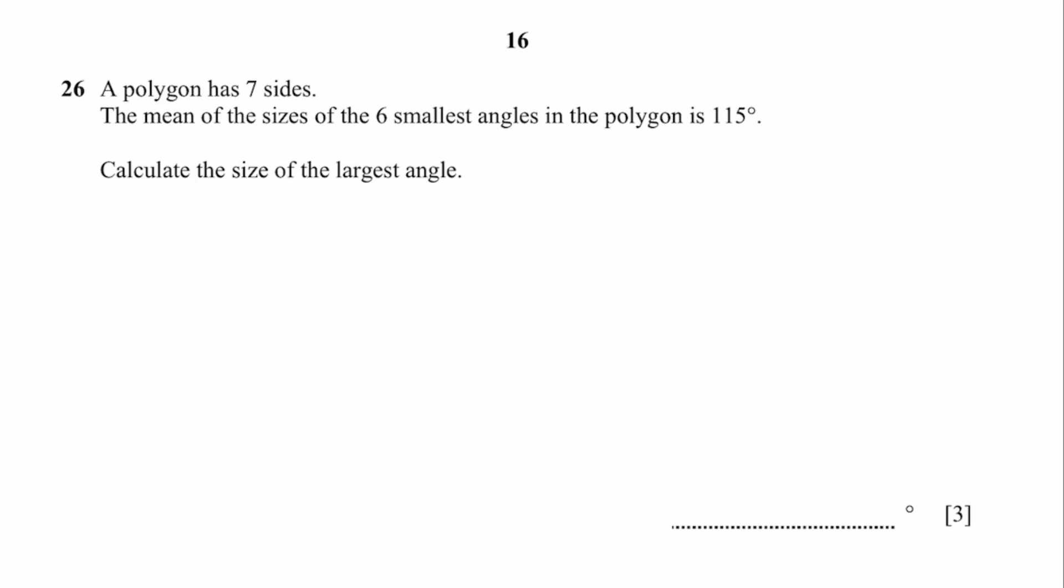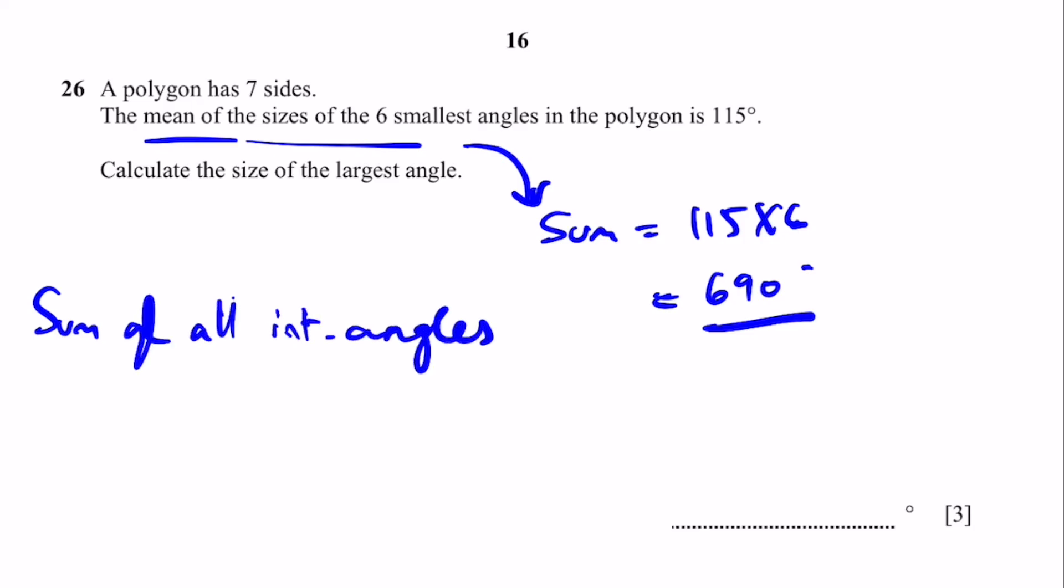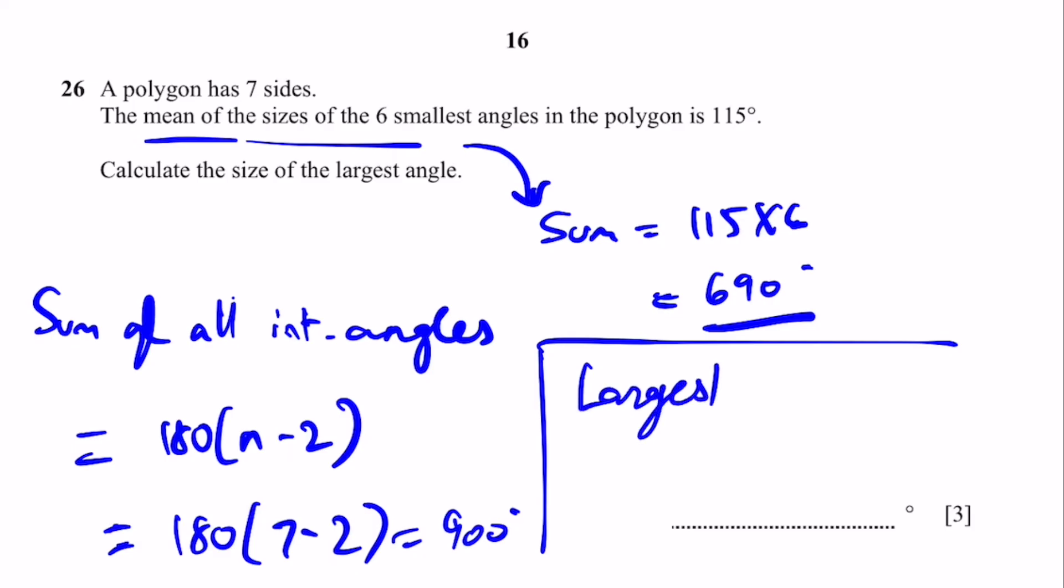Question 26. A polygon of 7 sides. The mean of the size of the 6 largest angles is 115. Calculate the size of the largest angle. So the sum of these angles is equal to 115 times 6, the mean times the number of angles, which is going to be 690 degrees. Now, the sum of all angles or all interior angles is going to be equal to 180 times the sides minus 2, 180 times 7 minus 2, which is 900 degrees. Now, the size of the largest angle is equal to 900 minus 690, which is simply 210 degrees. That's the answer.